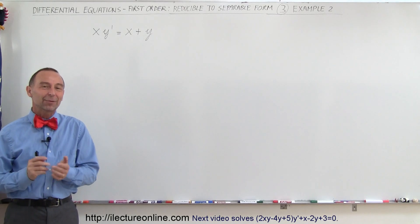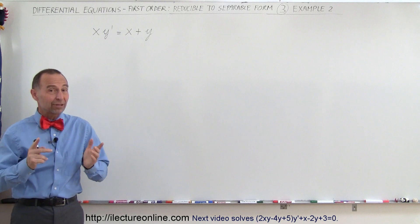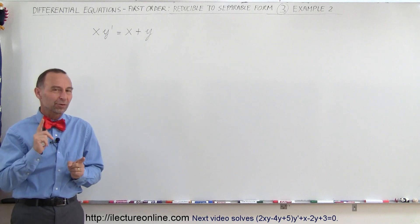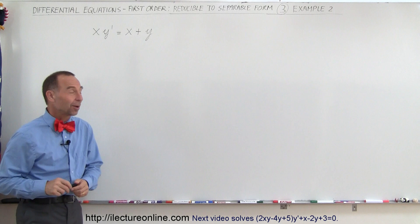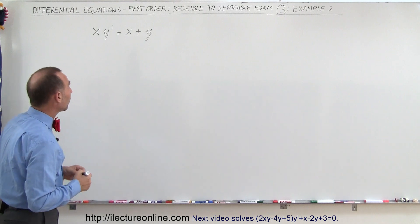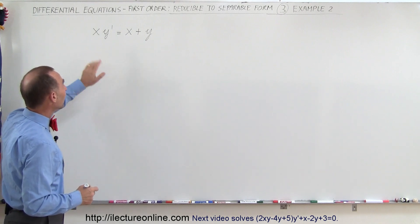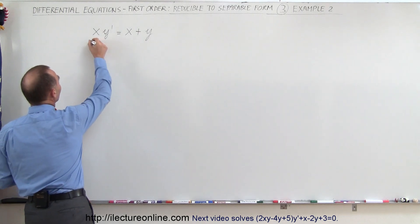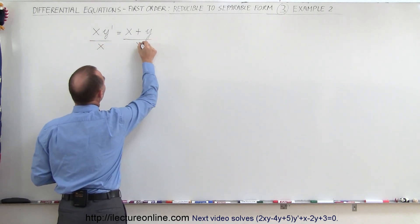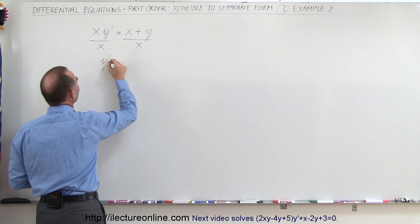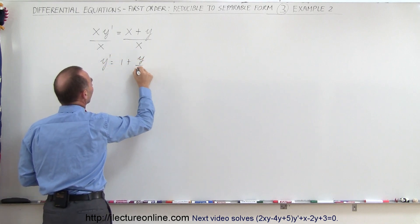Welcome to Electron Line. Here we have another example where we initially cannot separate the variables, but if you do something clever it becomes separable. So what we want to do here is divide both sides of the equation by x. When we do that, we get the following: divide this by x, divide this by x, and here we get y' is equal to 1 plus y over x.